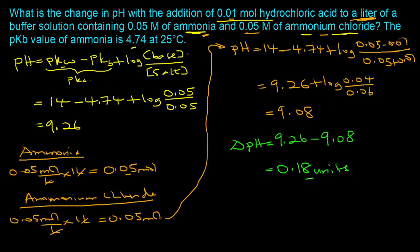The change in pH: delta pH = 9.26 − 9.08 = 0.18 units. We've now seen how it differs when you have a weak acid and salt stressed with a base versus a weak base and salt stressed with an acid. Pay attention to how the equation form changes and how the base decreases while the salt increases when acid is added. If you have more questions, leave them in the comment section.